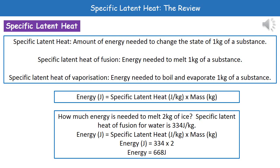This brings us to the second calculation of the topic: specific latent heat. Specific latent heat is the amount of energy needed to change the state of one kilogram of a substance. There are two values: the specific latent heat of fusion, which is the energy needed to melt one kilogram of a substance (solid to liquid or vice versa), and the specific latent heat of vaporization, which is the energy needed to boil and evaporate one kilogram of a substance (liquid to gas or vice versa).